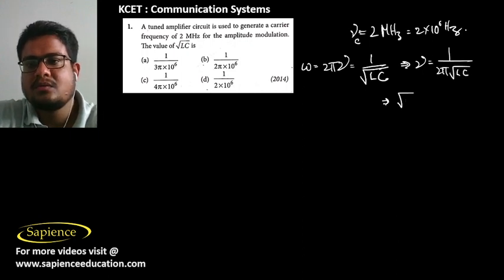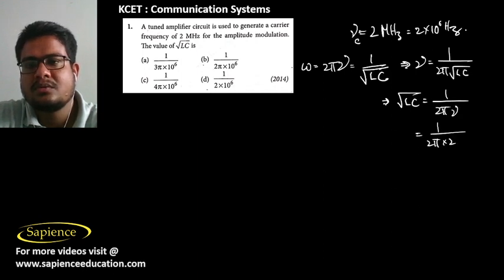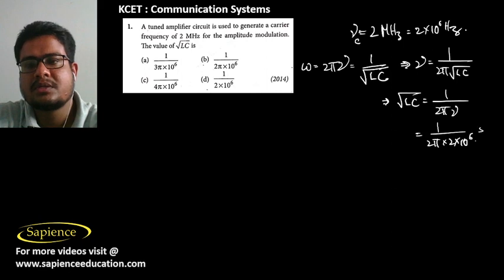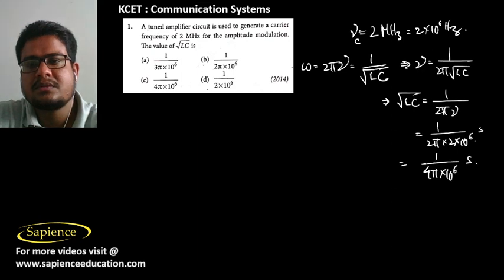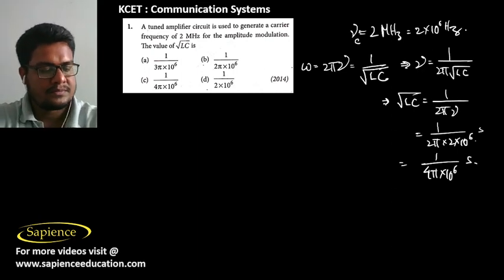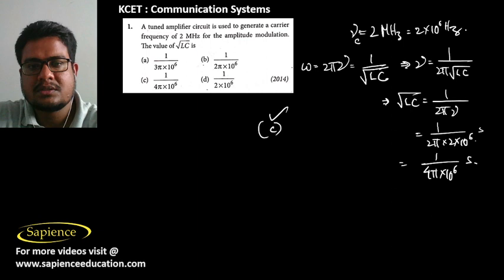So the frequency ν = 1 / (2π√LC). We need to find √LC, which equals 1 / (2π × ν) = 1 / (2π × 2 × 10⁶). This gives 1 / (4π × 10⁶) seconds. Option C is the correct answer.